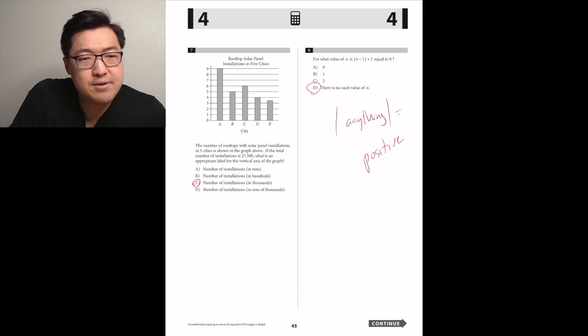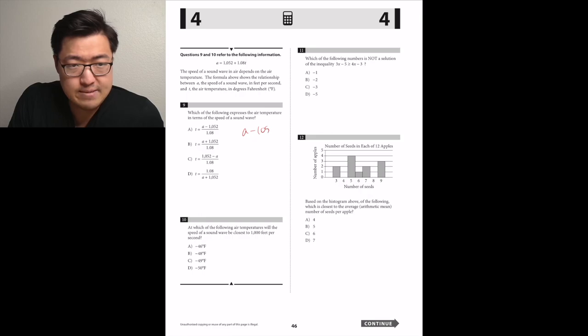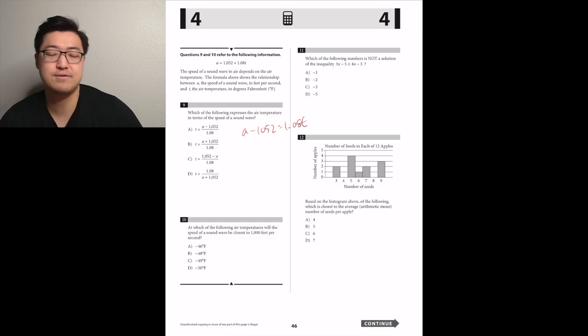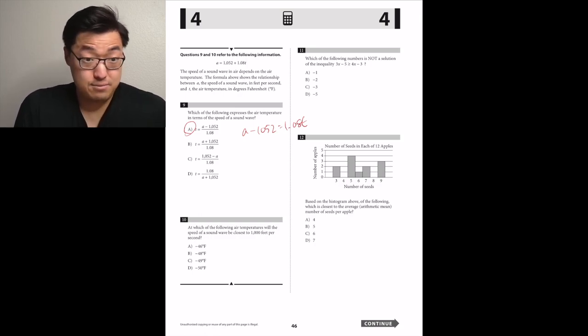For what value of N is absolute value of N minus 1 plus 1 equal to zero? There's no such thing, right? Because absolute value is always positive. So a positive number plus 1 wouldn't be 0. That would mean the absolute value thing would have to be negative, so D. The speed of sound wave in air depends on the air temperature. The formula above shows the relation between A, the speed of sound in feet per second, and T, the air temperature. Which of the following? This is the air temperature in terms of the speed of sound of the wave. If we want to solve for T, we're going to subtract 1052, move it to the other side. We'll get A minus 1052 is equal to 1.08T, and then divide by 1.08. So A.